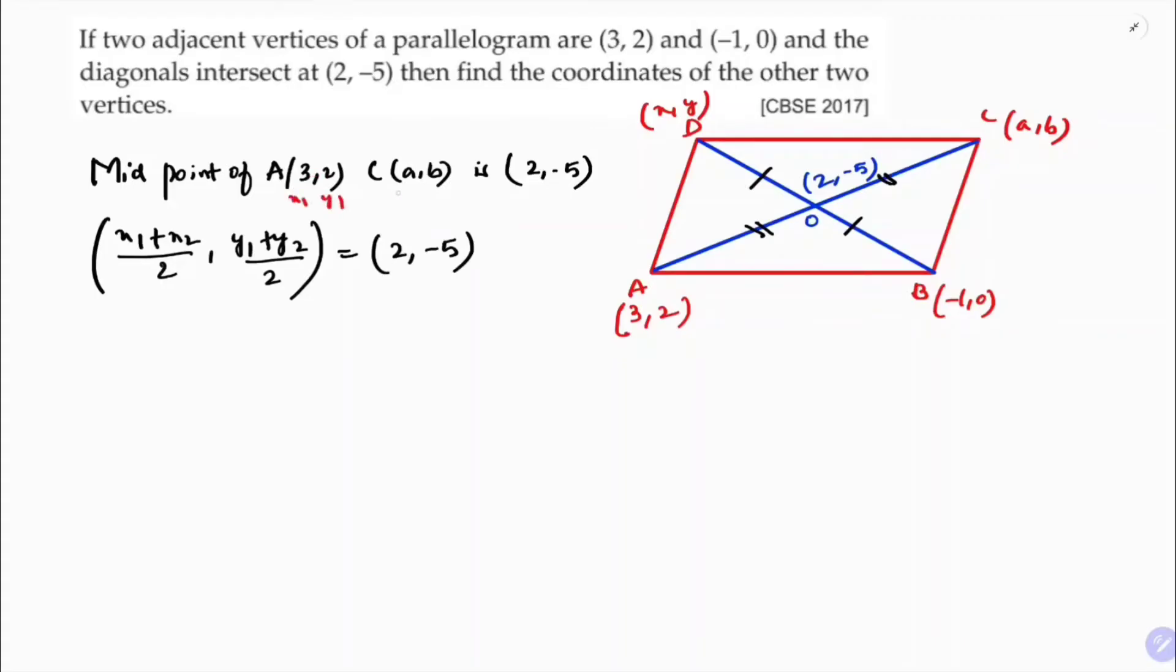So (3+a)/2, (2+b)/2 equals (2,-5). Now if I equate abscissa with abscissa and ordinate with ordinate.